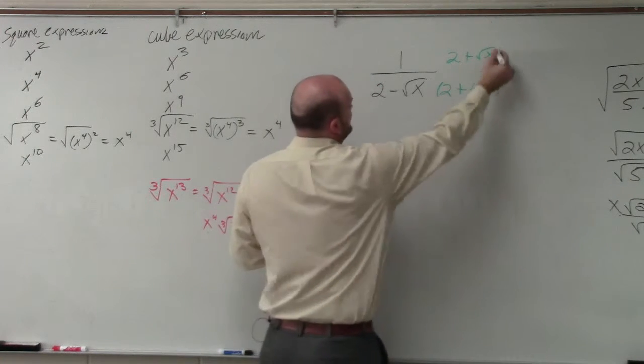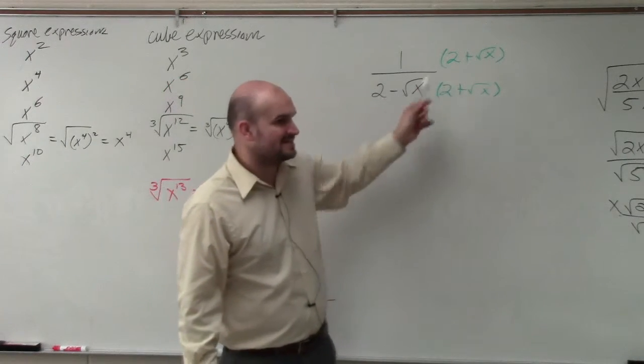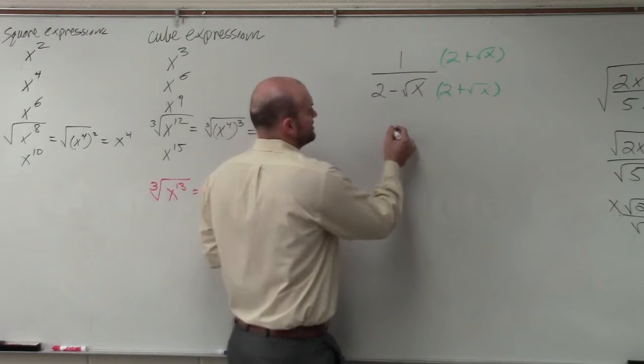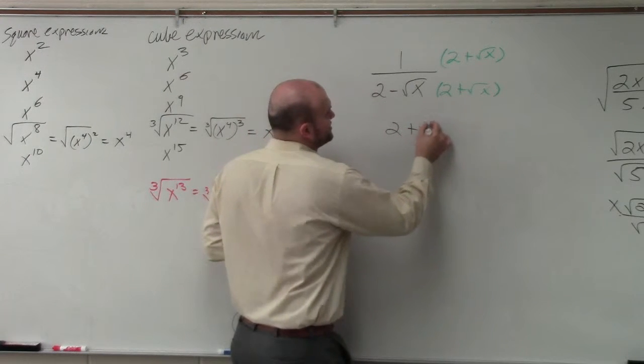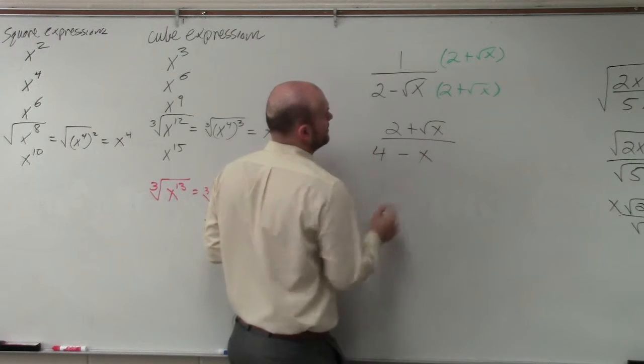Hopefully, you guys, by doing our homework, we have had practice in multiplying numbers by their conjugate. And you guys would see that it's going to be 2 plus the square root of x. In the denominator, I'm going to have 4 minus x.